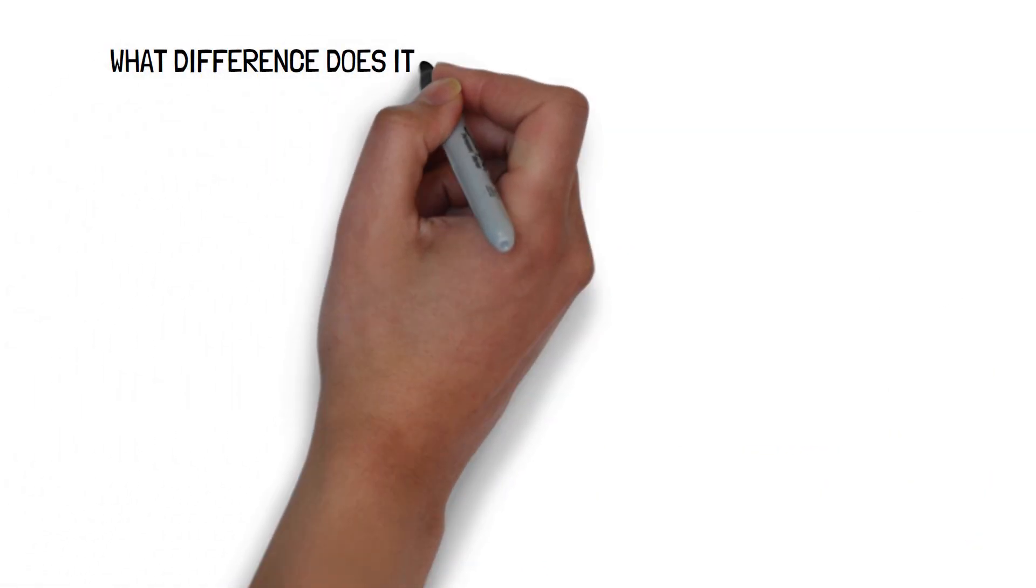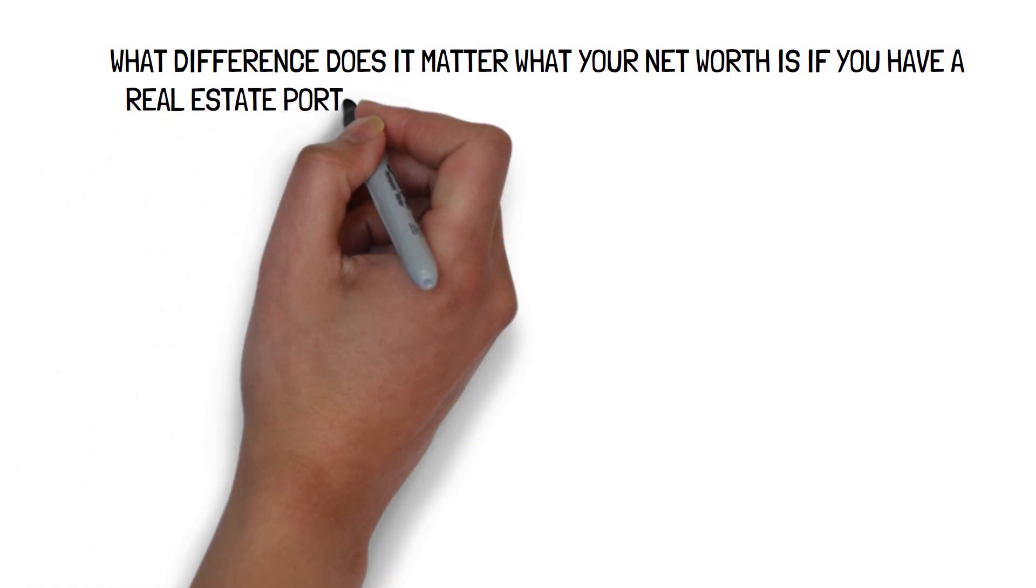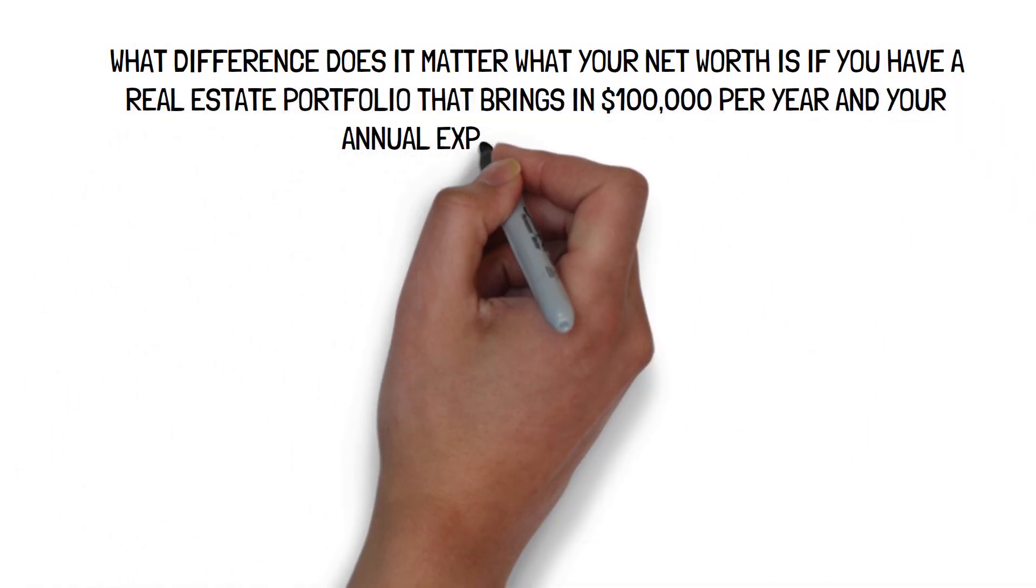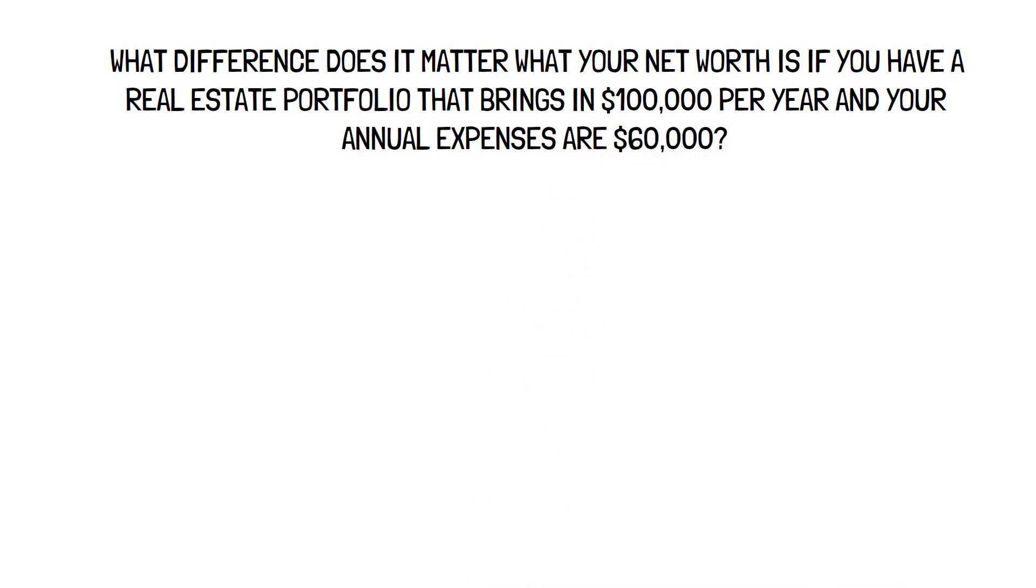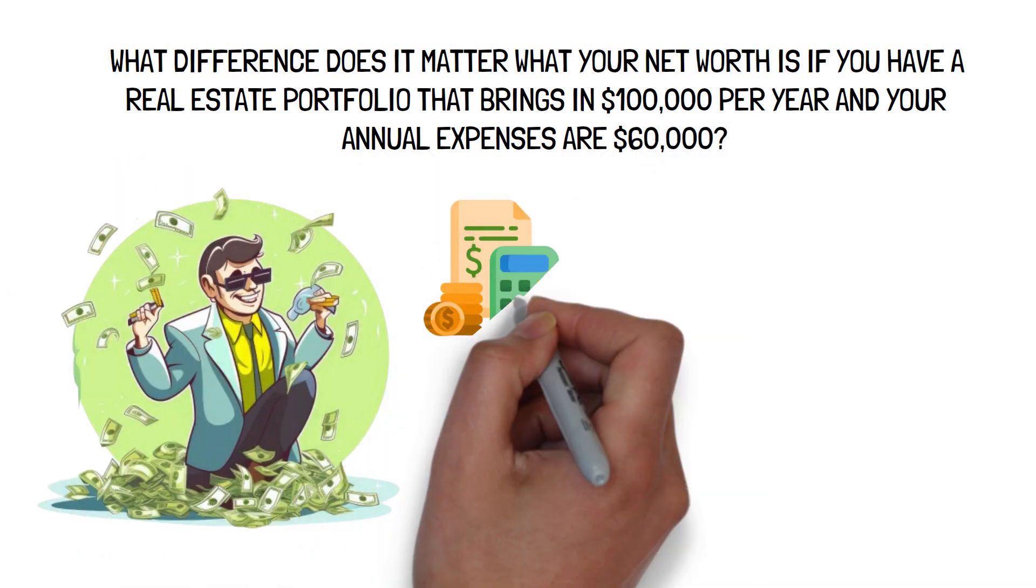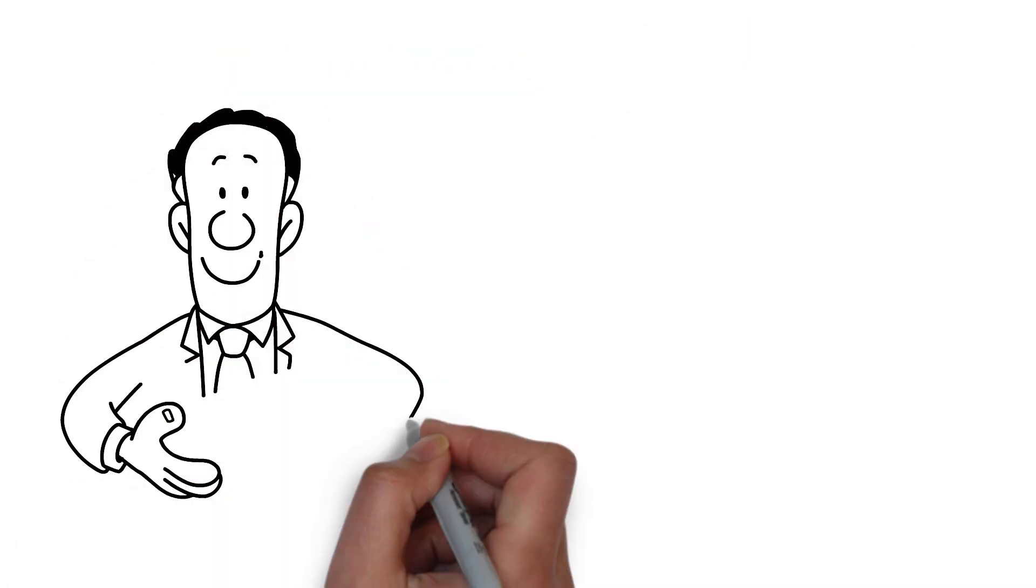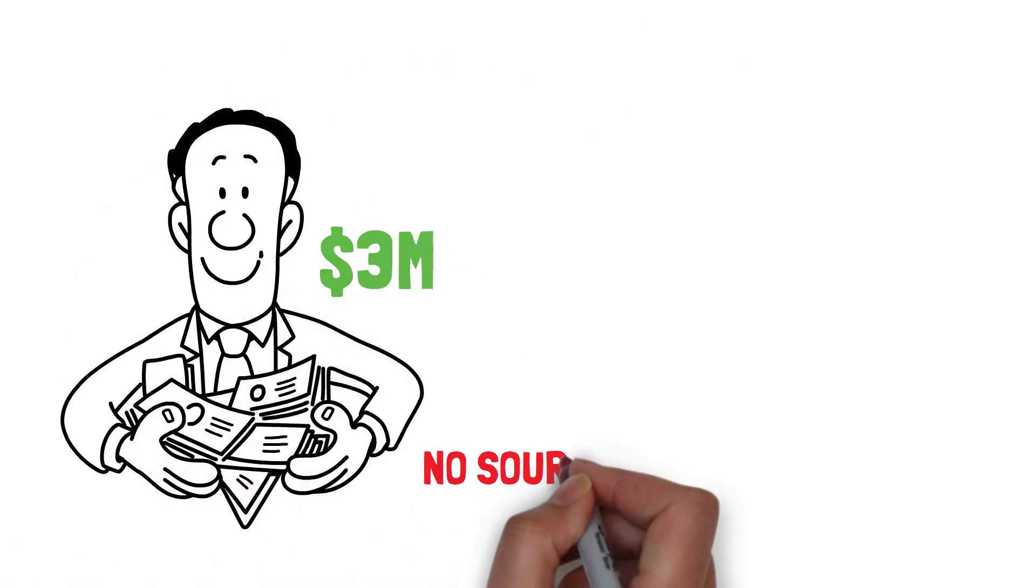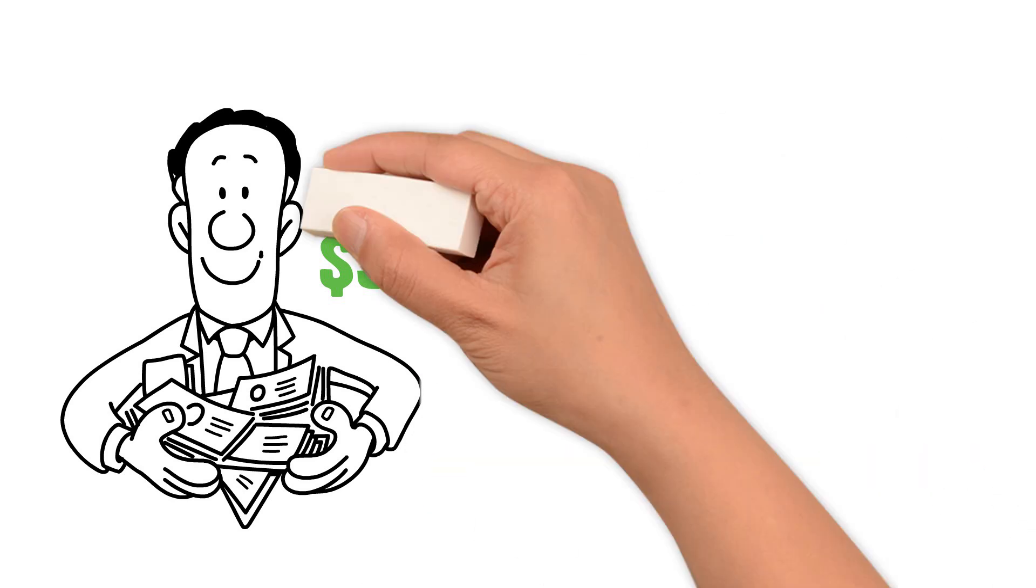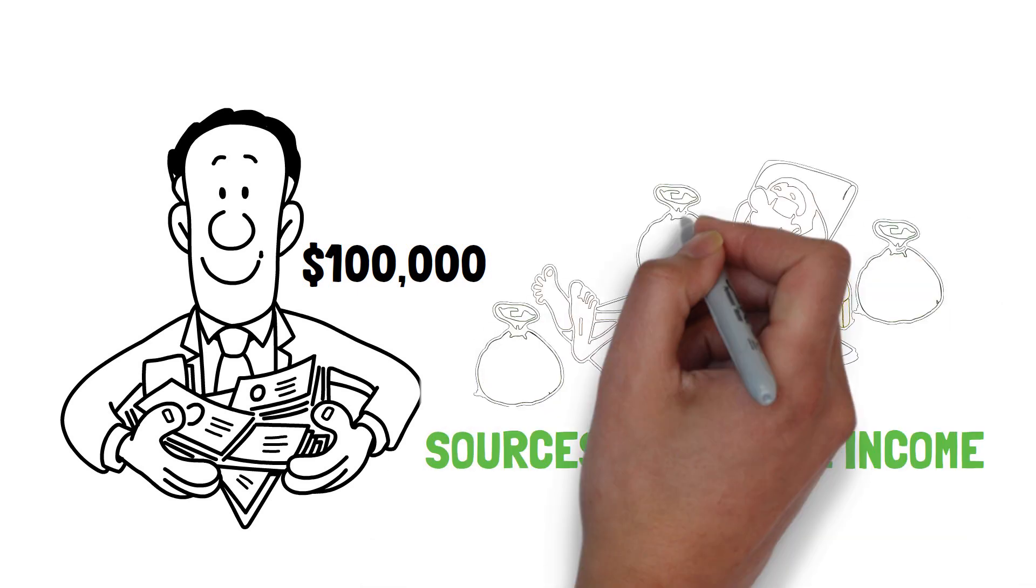What difference does it matter what your net worth is if you have a real estate portfolio that brings in $100,000 per year and your annual expenses are $60,000? You are financially independent when your passive income surpasses your expenses and you no longer need to work. Someone with a net worth of $3 million but no sources of passive income cannot retire. On the other hand, someone could have a net worth of $100,000 and be completely retired.